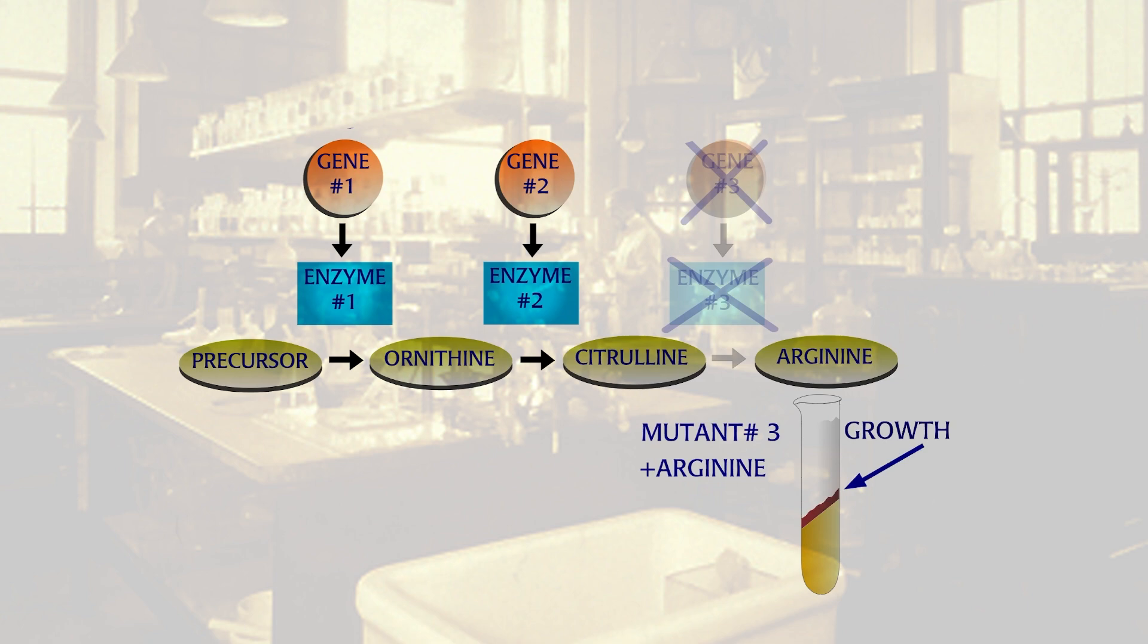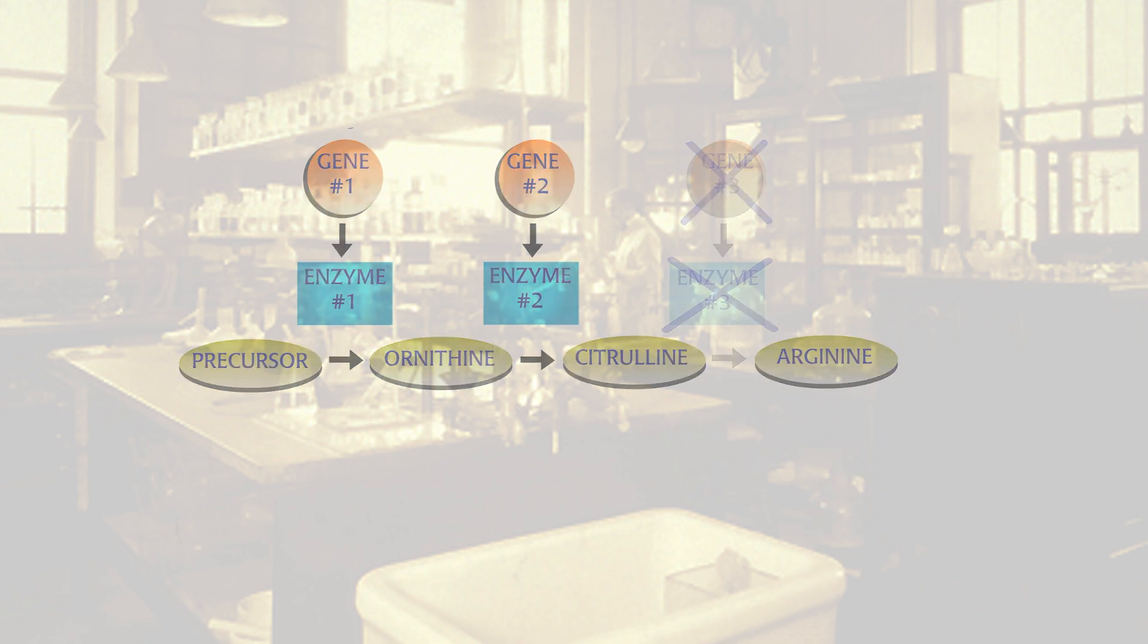With each mutated gene, only one step of the metabolic pathway is affected. Therefore, one gene is responsible for one enzyme or protein.